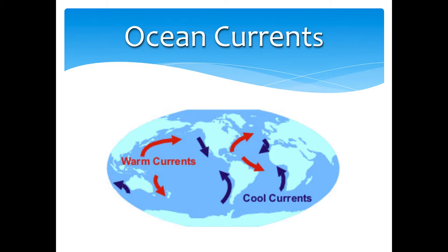As the earth is rotating, that uneven heating excites the molecules. As we know, heat rises, and then the cooler air rushes in to take its place — and that kicks the whole party off. Now we have convection all over the globe.